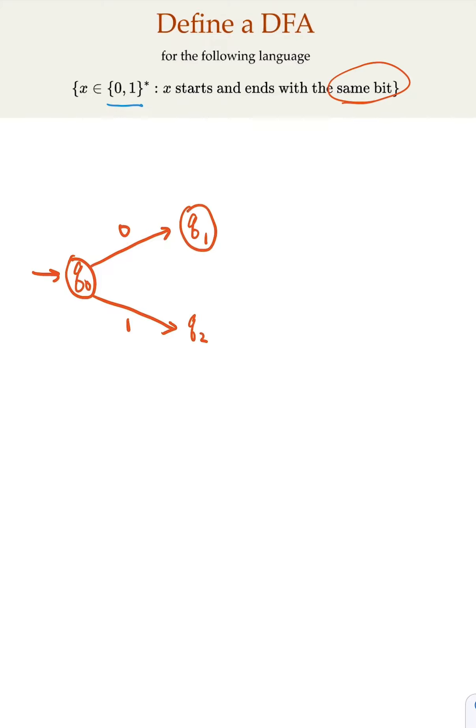Now, at this state, if you've got a 0, that's good because it could end with 0. That's an accepting state here. Now, if you've got a 1, you have to jump out to another state. Yeah, let's call it Q3.